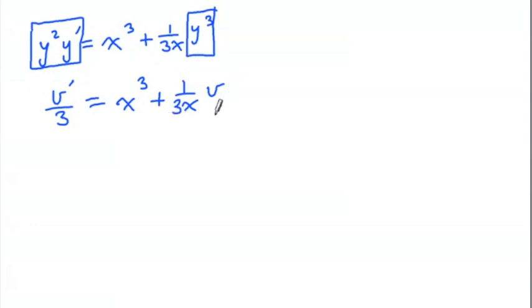So what I'm going to do is move the v term over to the other v term, and I'm going to multiply by 3 at the same time. If I multiply by 3, we're going to get v prime. It's going to become minus 1 over x. The 3 will cancel when I multiply it through. v equals 3x cubed.